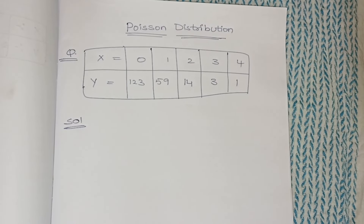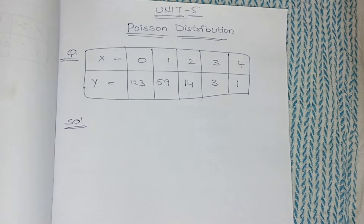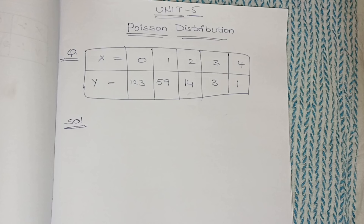Hello all, welcome back to our channel. In this video we will discuss Unit 5 important problematic questions in Business Statistics 2, that is Poisson distribution. In Unit 5, Poisson distribution will be easy and the most repeated problematic question in Part B. We may expect one theory question and one Poisson distribution problematic question from Part B. The remaining binomial distribution problems you better skip, as it will be difficult to understand.